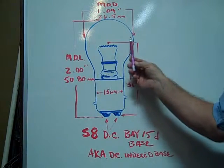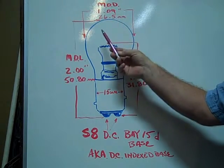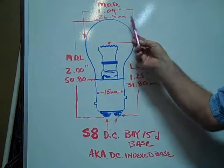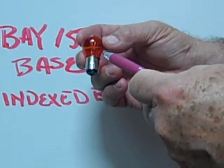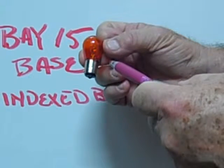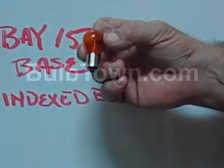The maximum outer diameter of the glass envelope is 1.04 inches or 26.5 millimeters. This is an example of a number 2357 AMBER BAY 15D base miniature bulb.